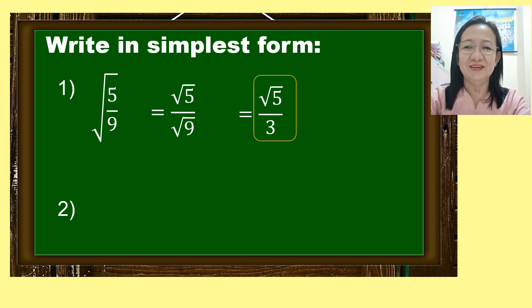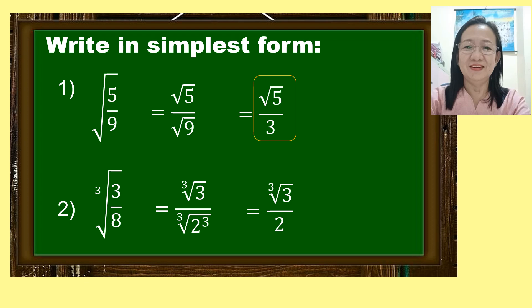Now let us look at example number 2. Our given is the cube root of 3 eighths. Same process — let us separate the numerator and denominator: cube root of 3 over cube root of 8. We can rewrite cube root of 8 as cube root of 2 cubed, so that we can easily determine if the exponent is divisible by the index. Getting the cube root of 2 cubed equals 2. Therefore, cube root of 3 over 2 is the simplest form.